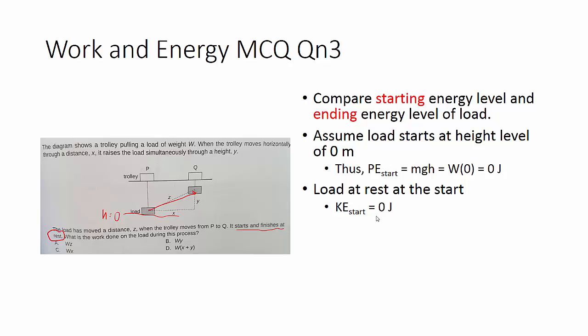The load starts at rest. You find that kinetic energy is equal to 0 joules. So the load ends up at an increased height of h. So in this case, kinetic energy here is 0, but the potential energy is increased height, so it's mg.